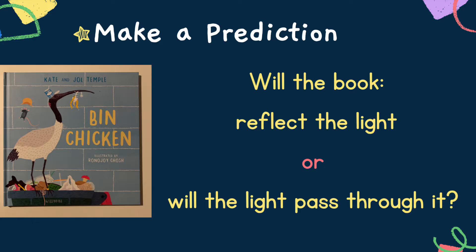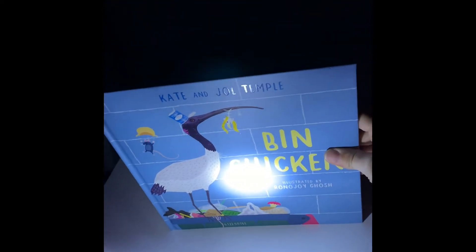I want you to have a really good guess — do you think that the book will reflect the light? That means it will stop the light from passing through it, or do you think the light will pass through it? What's your prediction? I'm going to put the book in front of the torch. Have a look to see what happens. You can see in the background that the wall goes dark — this means that the book reflects the light.